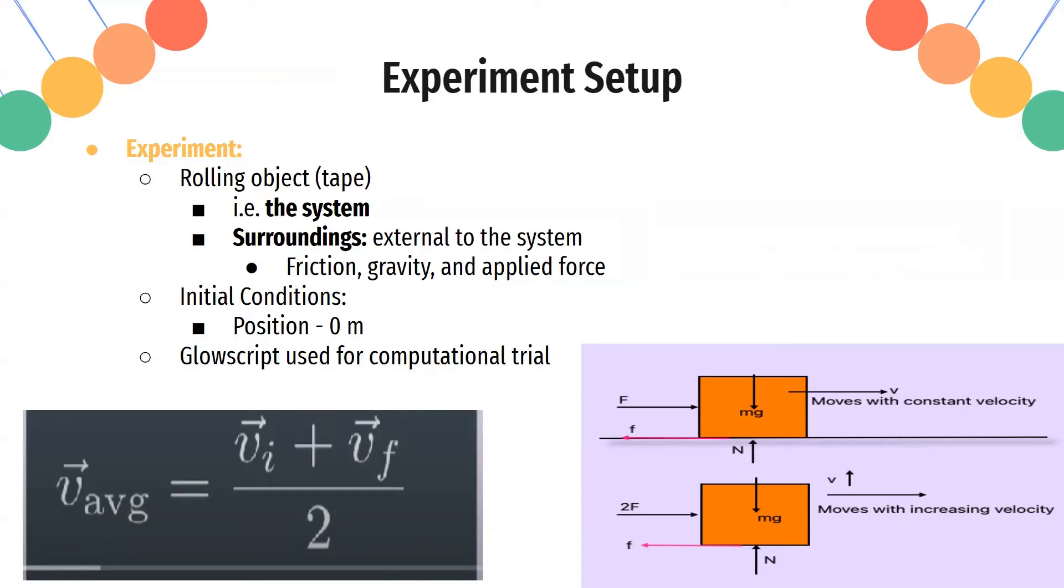Of course, Glowscript is used for computational trials. And another formula here is that whenever there's zero or constant acceleration, we can actually use this very simple formula to calculate velocity average, and that's that we take the sum of the final and initial velocities and divide it by two. And these free-body diagrams basically represent what exactly we want here. If applied force is greater than friction, there will be a net force and acceleration, which means increasing velocity, which is what we do not want. We want to model the fact that friction and applied force cancel each other out - net force zero, no acceleration. We want the object to have constant velocity.